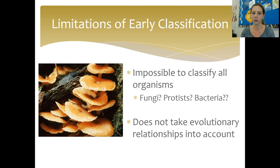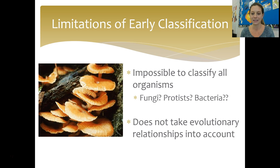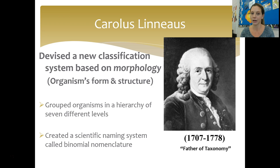Some limitations of early classification were that it was impossible to classify all organisms into just two categories — plants and animals. For example, mushrooms don't really fit there. When we started learning about unicellular organisms like an amoeba, that doesn't fit into plants and animals either. We also now know that classifying that way doesn't take into account evolutionary relationships, which is super important in biology.